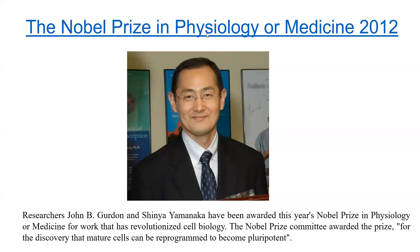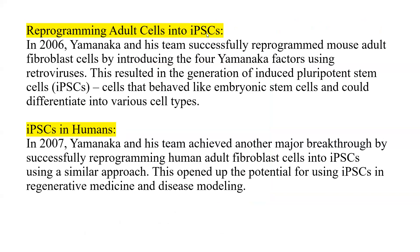What Sir Yamanaka did was reprogram the mature cell to become pluripotent — reprogramming adult cells to become induced pluripotent stem cells. In 2006, Yamanaka and his team successfully reprogrammed cells. What usually happens is the cell goes two-cell stage, four-cell stage, and all cells form the blastula with the power to become pluripotent.